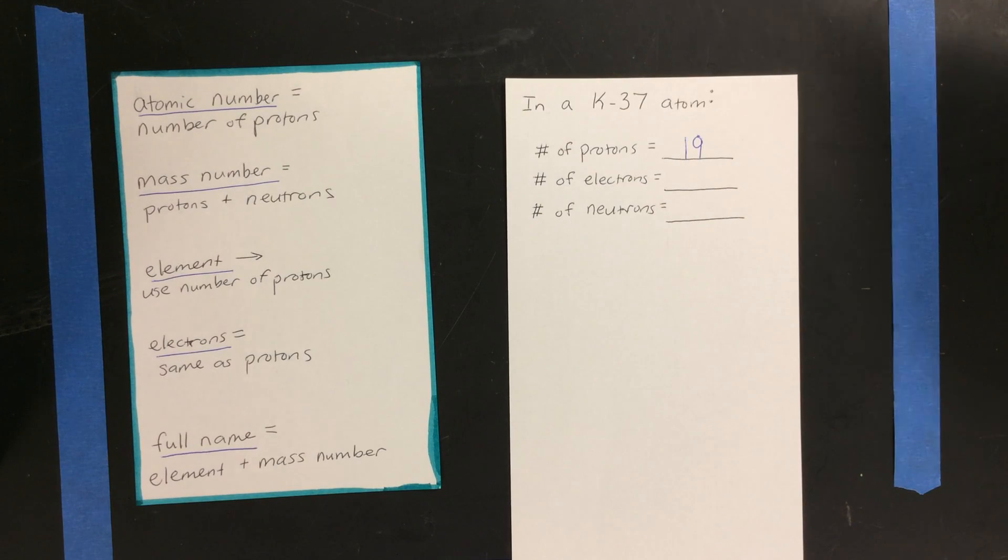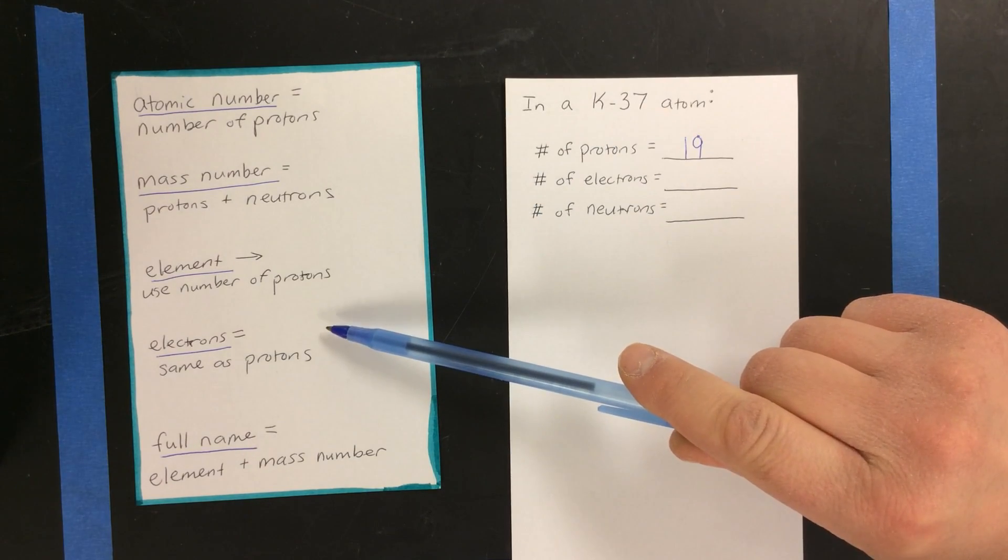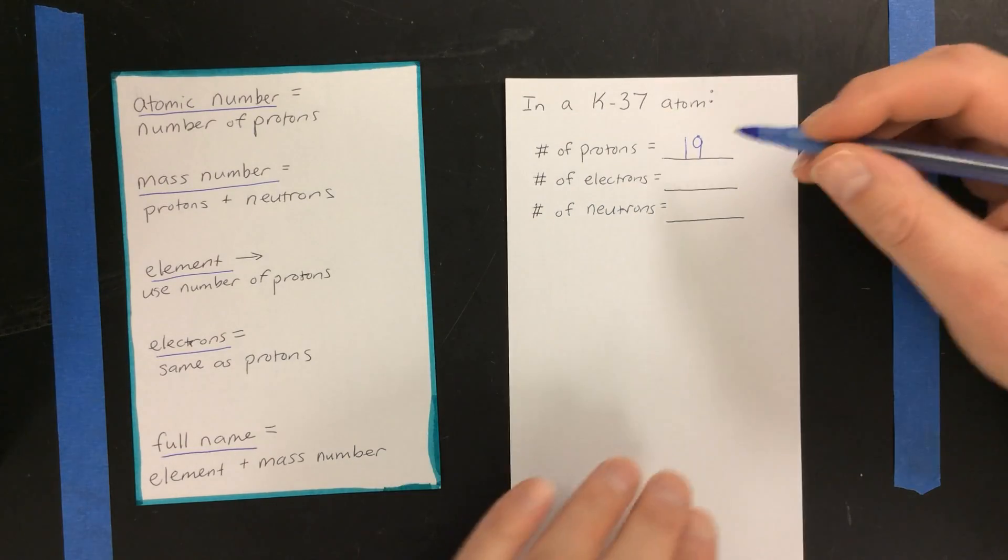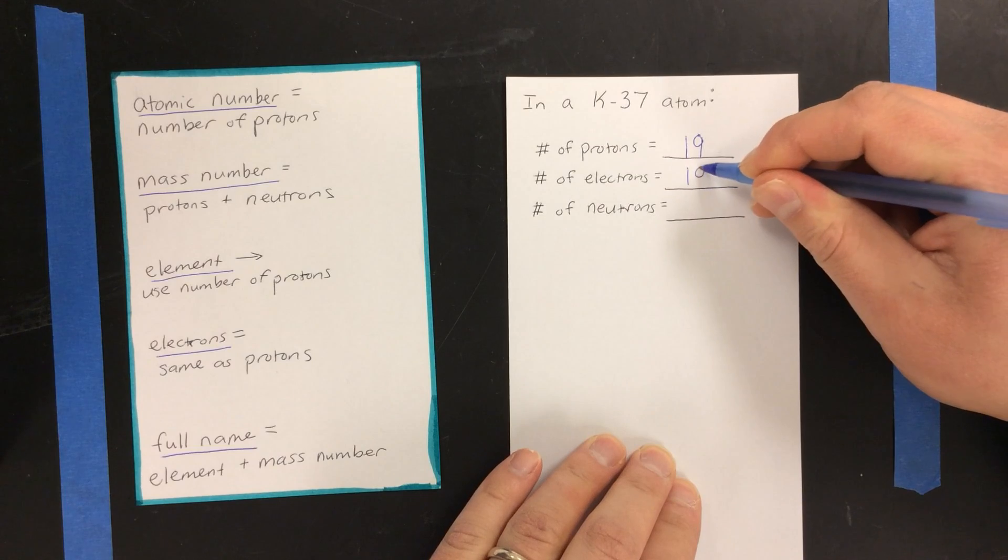Next comes the electrons. Well, I know all atoms start with the same number of electrons as protons. So if it has 19 protons, it must start with 19 electrons.